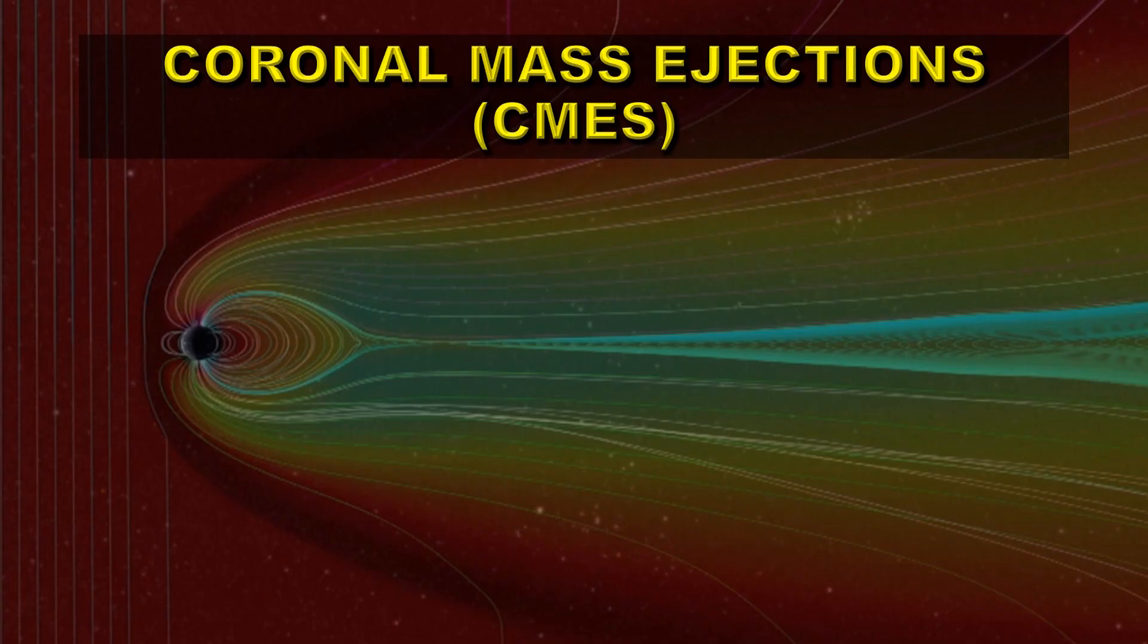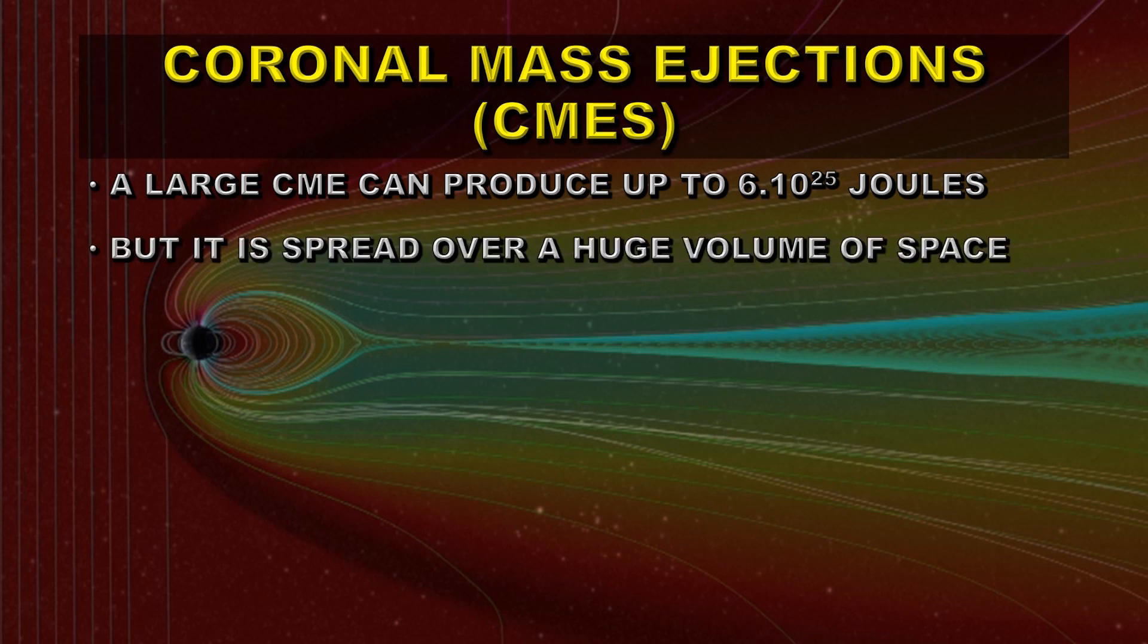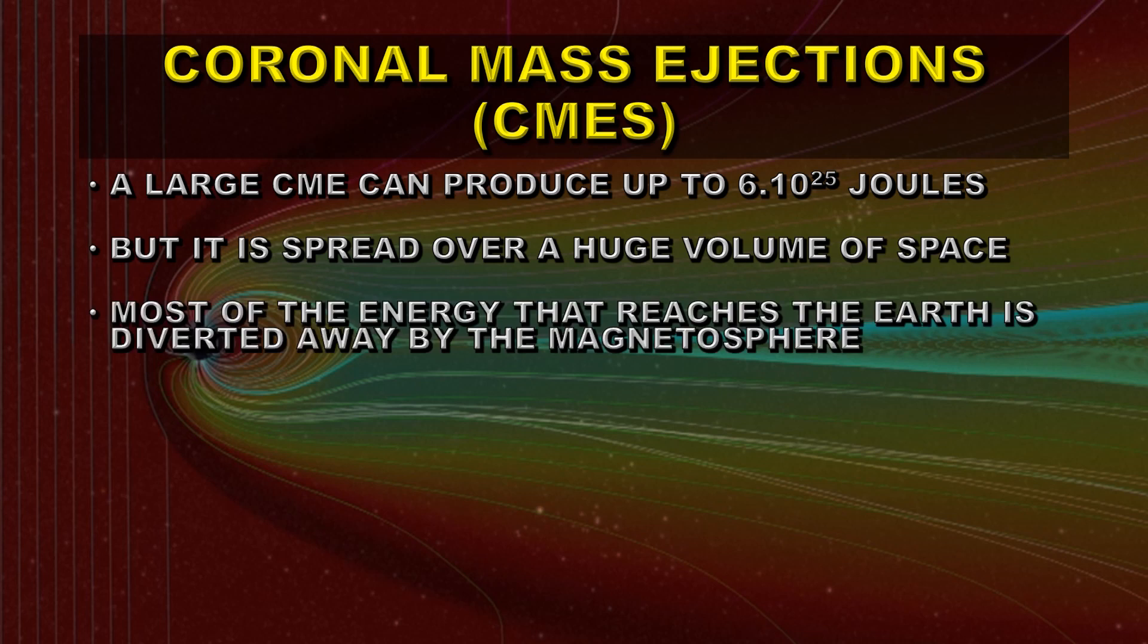Coronal mass ejections, or CMEs, produce also a great deal of energy, something like 6 times 10 to the 25 joules for the larger ones. But the trouble is, these are spread over a huge volume of space, and most of the energy that reaches the Earth is diverted away by the Earth's magnetosphere. So the efficiency of transfer of energy from the coronal mass ejection to the Earth is very, very poor.